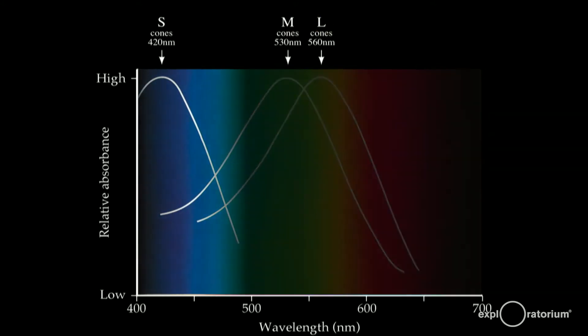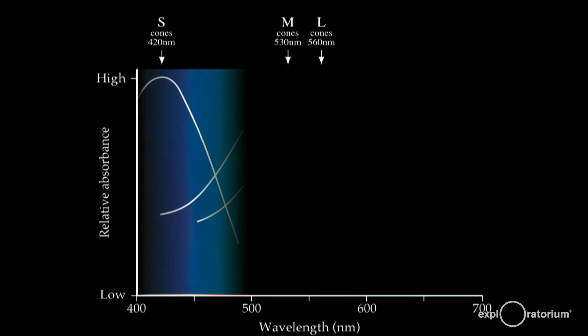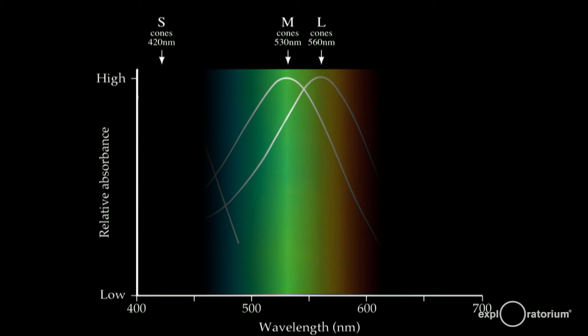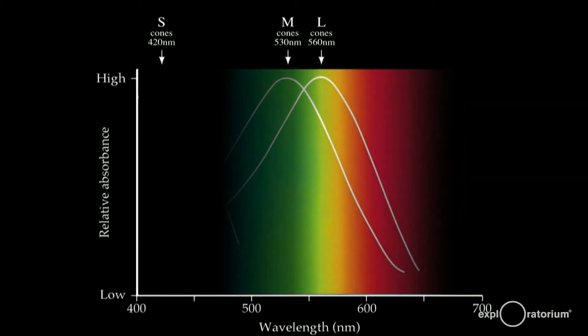The S cones cover the blue and violet end of the visible spectrum. The M cones correspond to the middle, or greenish range, and the L cones correspond to the reddish end of the spectrum.